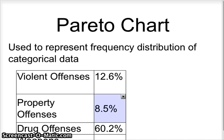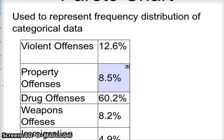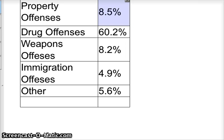So 12.6% of federal prisoners have violent offenses. Property offenses are 8.5%, drug offenses 60.2%. Weapons offenses 8.2%, immigration offenses 4.9%, and others 5.6%. So how do we graph these?